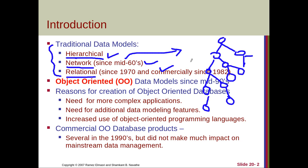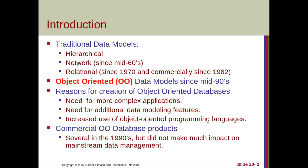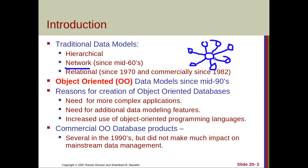Later there was another data model called the network data model, which was slightly popular. In this model, all the data are connected to a single network, which is different from the hierarchy model. When new data is added, it is added into the same network. This model was popular during the mid-1960s, but maintaining it was difficult.